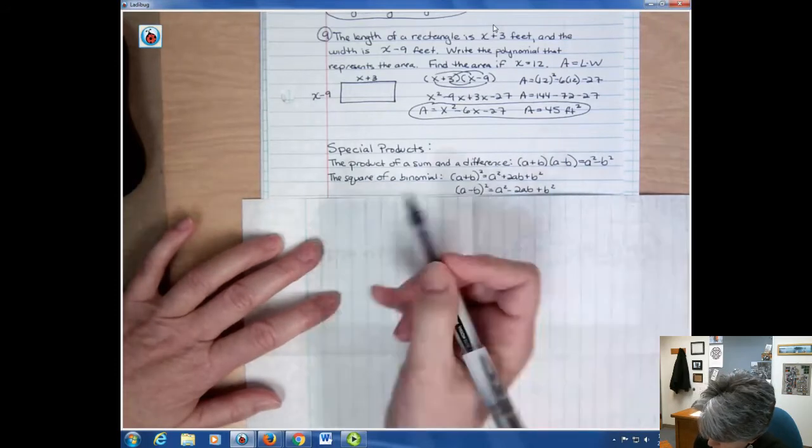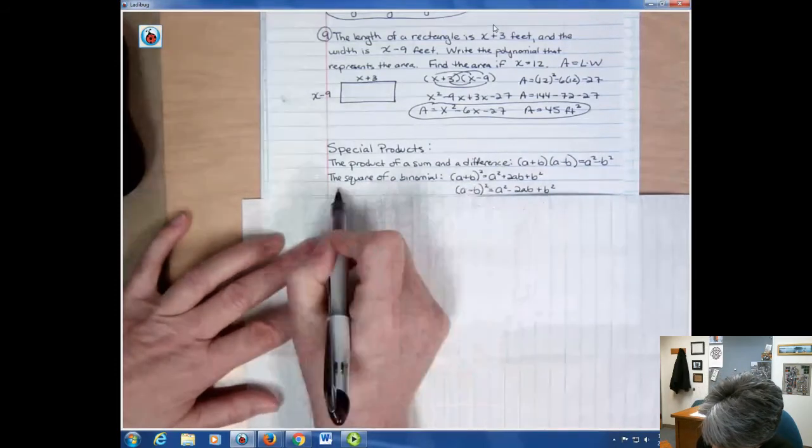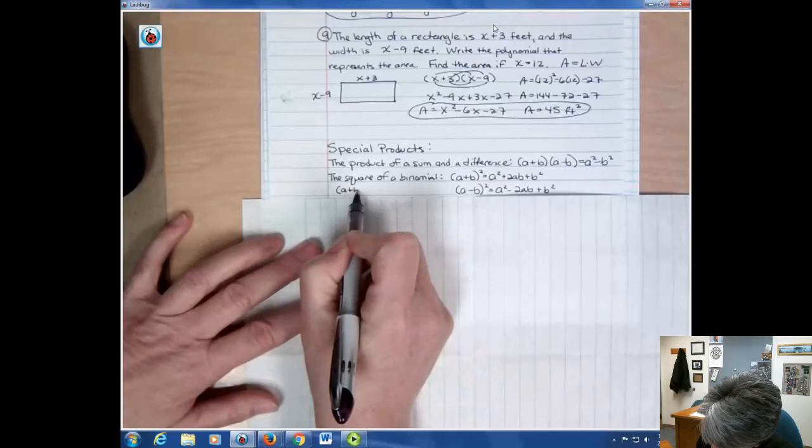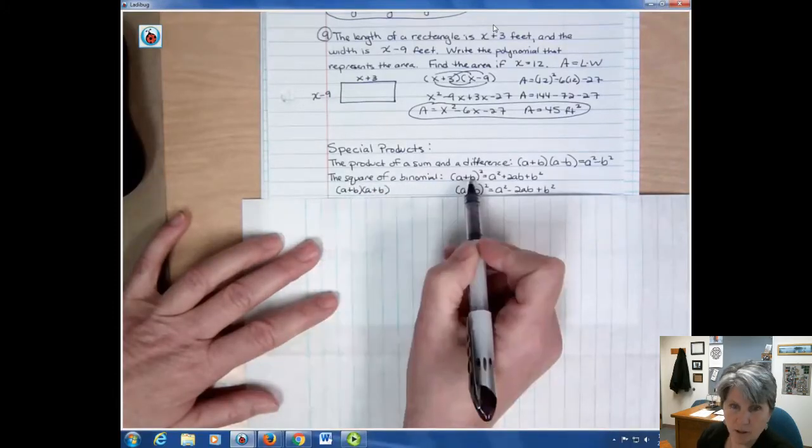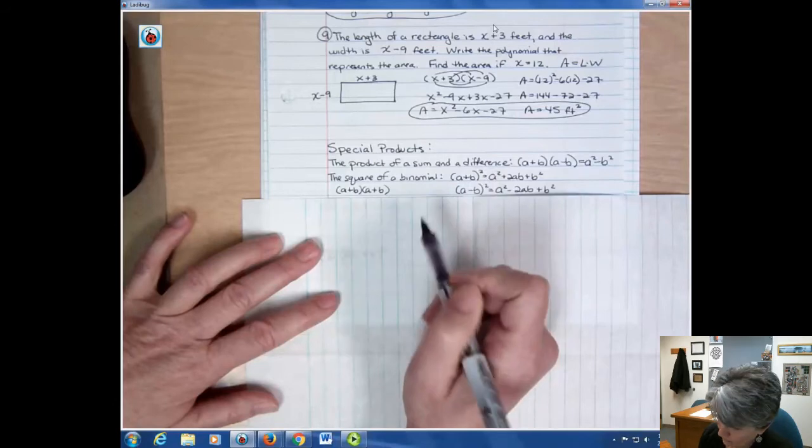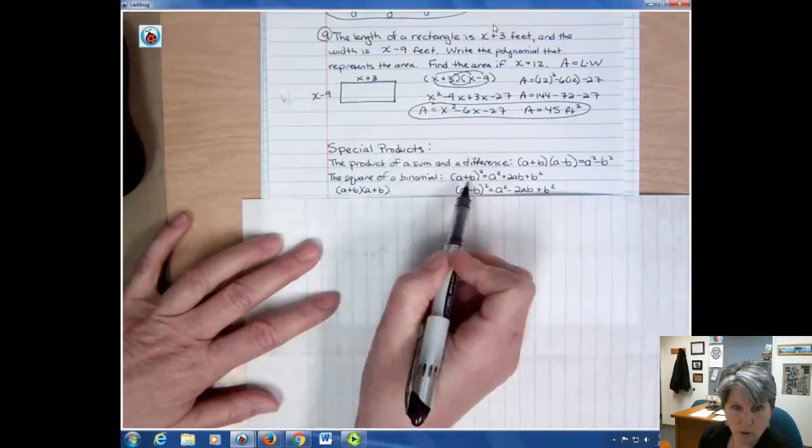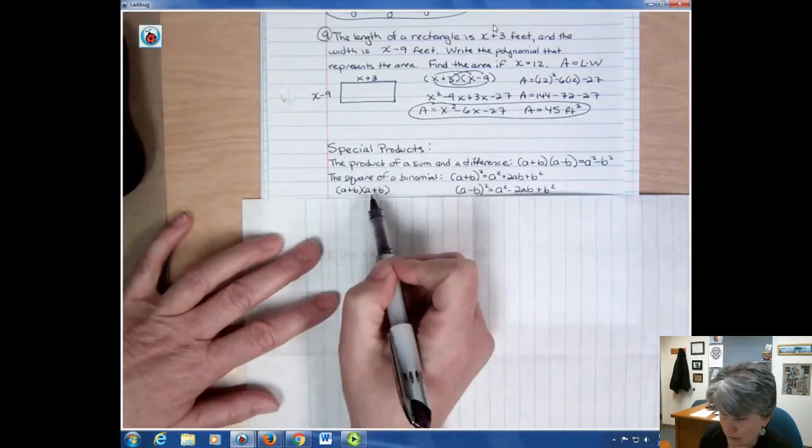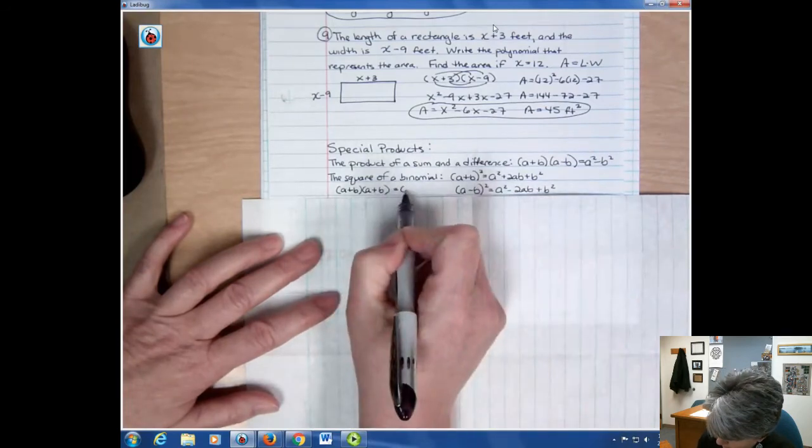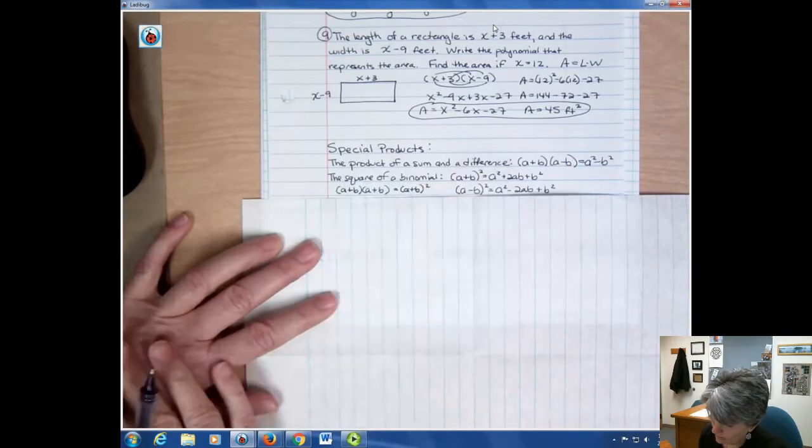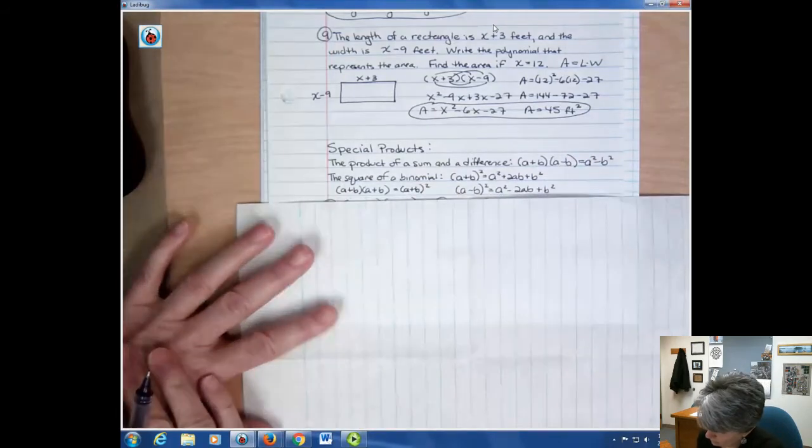So remember, you might be given something like a plus b times a plus b. That's the same as a plus b squared, right? And then if you wrote it out this way, you could just FOIL it. That's how you could avoid using the shortcut if you wanted, right? So that's the same as a plus b squared. So you can always write it out and just FOIL it if you want.